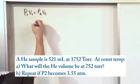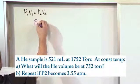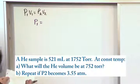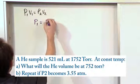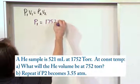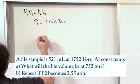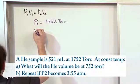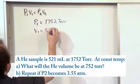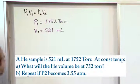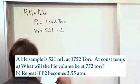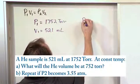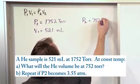So what I do is I write down all the variables. P1 is the initial state. The initial pressure is 1,752 torr. And the initial volume, V1, is 521 milliliters. I'm going to write that down. And then we also know the final pressure. We know P2 is 752 torr.